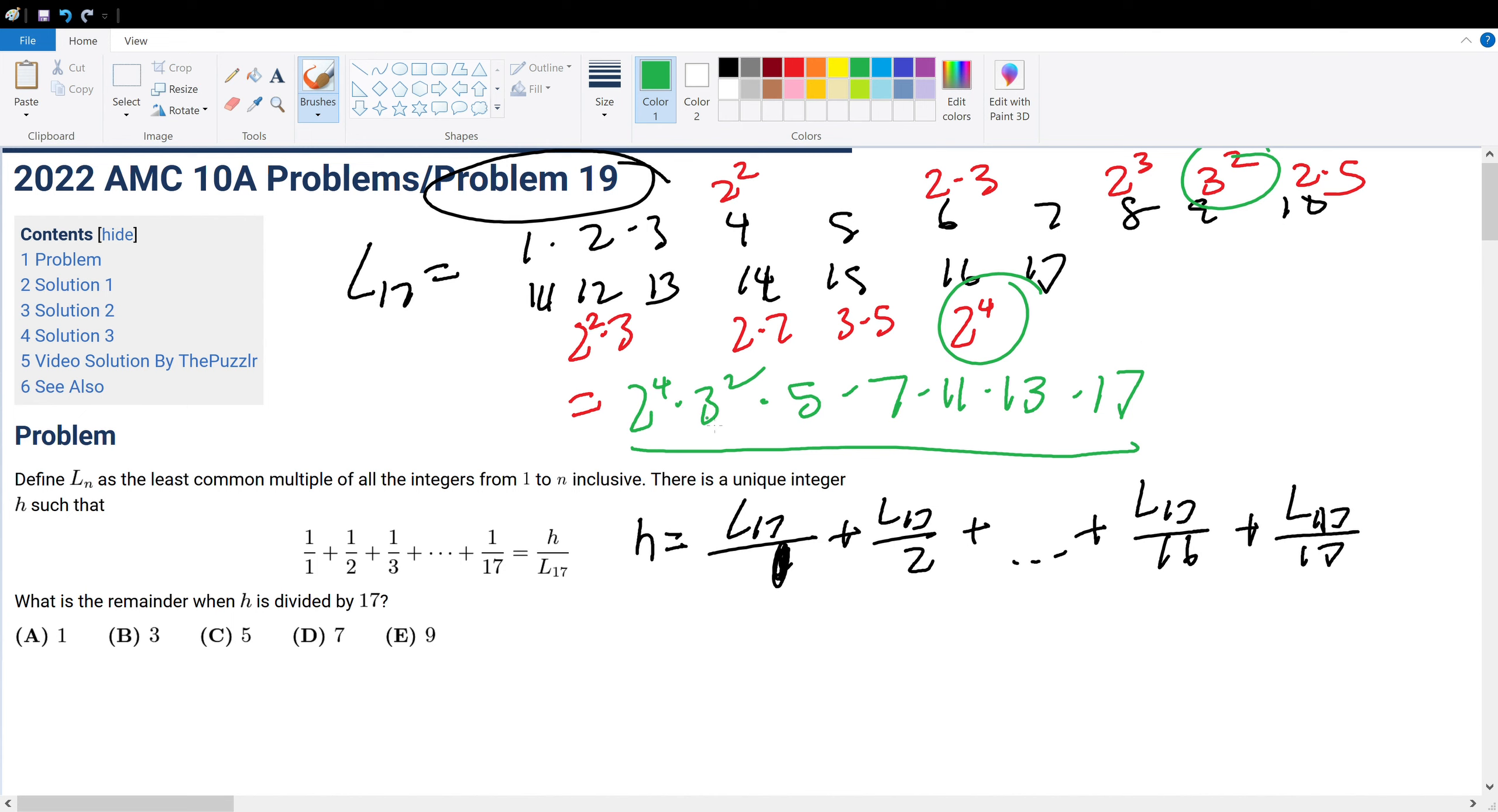So, now that we have our least common multiple calculated, we see that when we use this least common multiple number, and then we divide this by 1, divide this by 2, all the way to divide this by 16, we get a whole number, which has a remainder of 0. So, we could technically ignore this in context of this question, because they just want us to find what is the remainder of H when it is divided by 17.